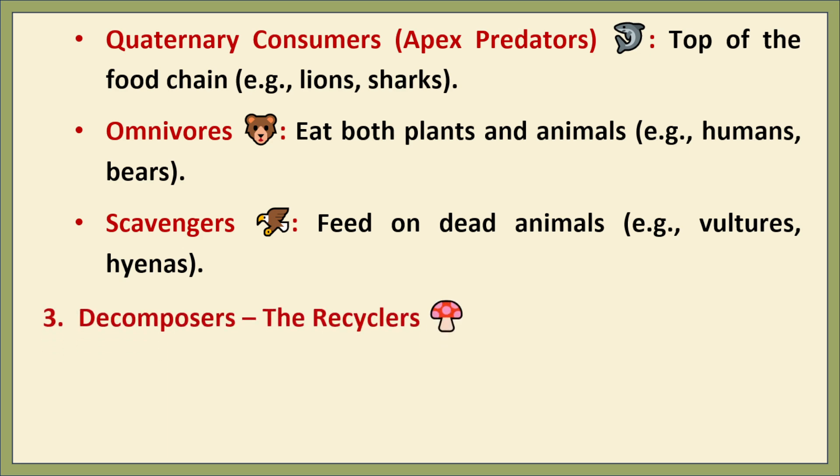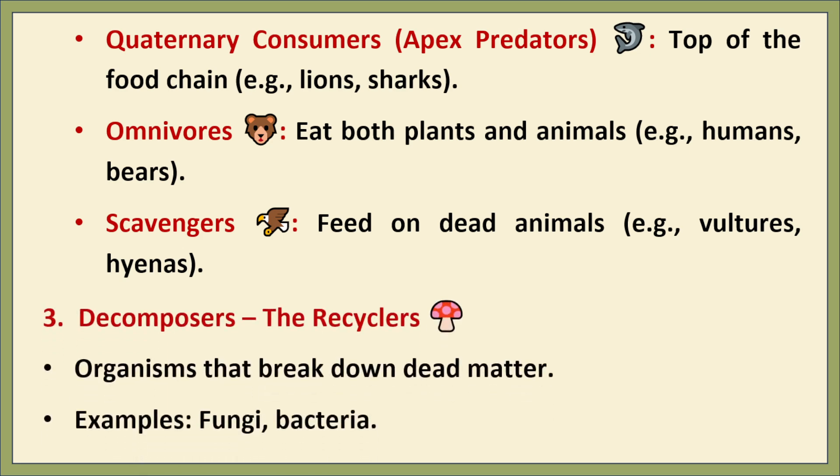The third category is decomposers. They are organisms that break down dead organic matter into simpler substances, releasing nutrients back into the ecosystem. They play a vital role in recycling nutrients. Examples include fungi and bacteria.